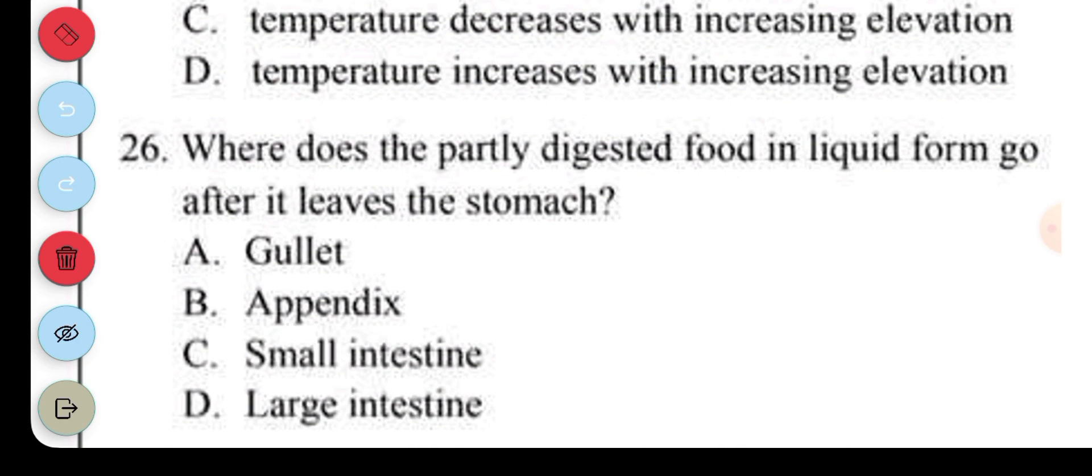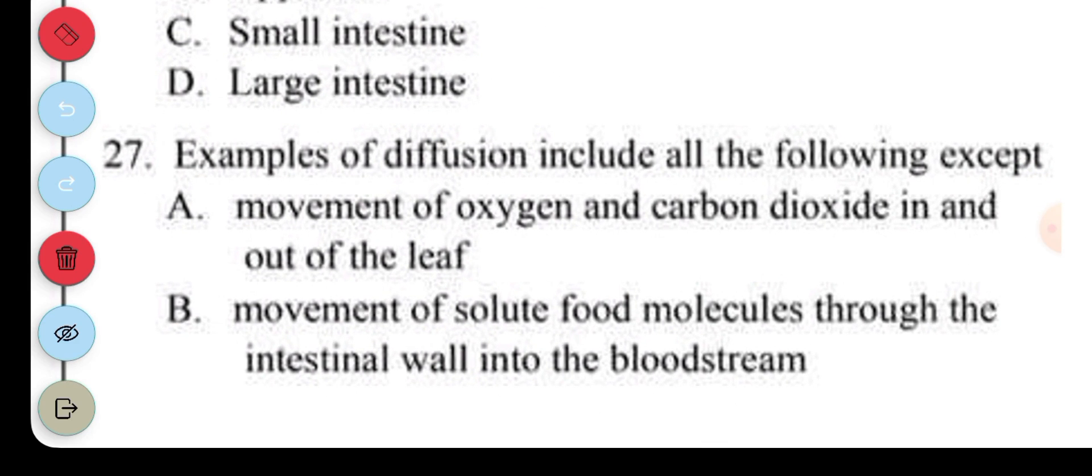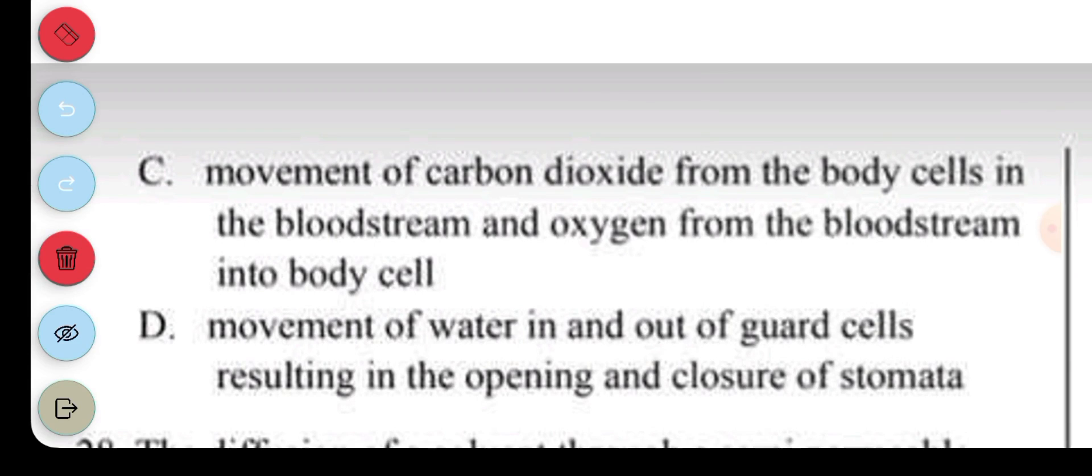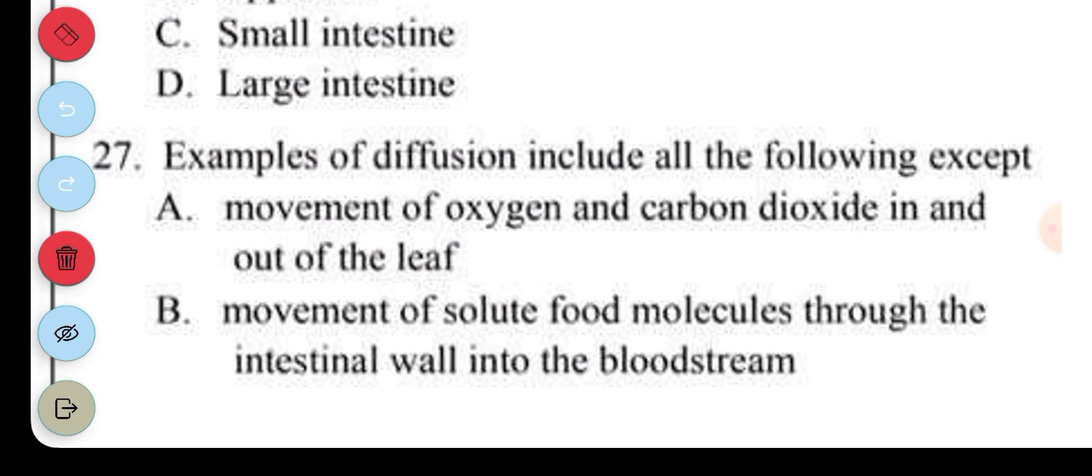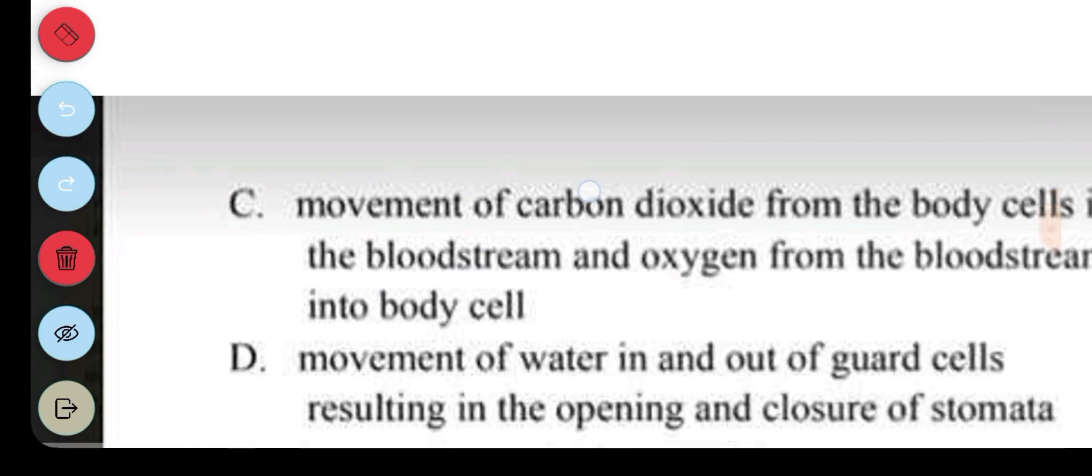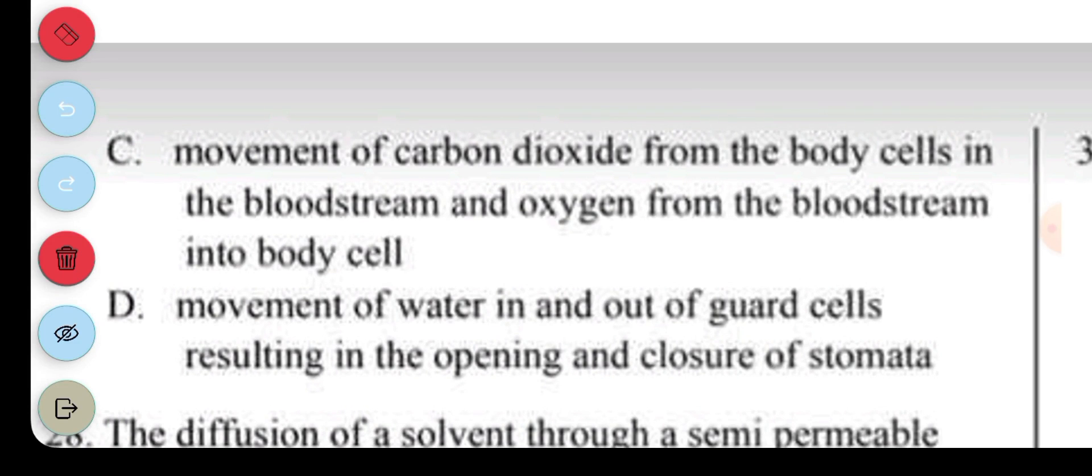Question 26. Where does the partly digested food in liquid form go after it leaves the stomach? A. Gullet. B. Appendix. C. Small intestine. D. Large intestine. It actually goes into the duodenum, which is also part of the small intestine. Question 27. Examples of diffusion include all the following, except: A. Movement of oxygen and carbon dioxide in and out of the leaf. B. Movement of solid food molecules through the intestinal walls into the bloodstream. C. Movement of carbon dioxide from the body cells to the bloodstream and oxygen from the bloodstream. D. Movement of water in and out of the gut cells resulting in opening and closure of the stomata. The question is all of these are diffusion except, so it means you are looking for an example of osmosis. Osmosis has to do with movement of water molecules, so definitely the answer is D.